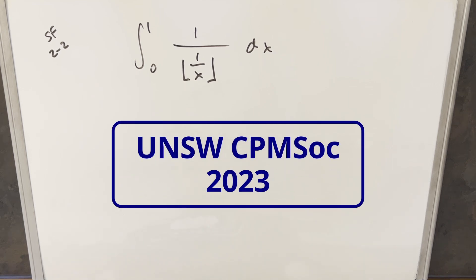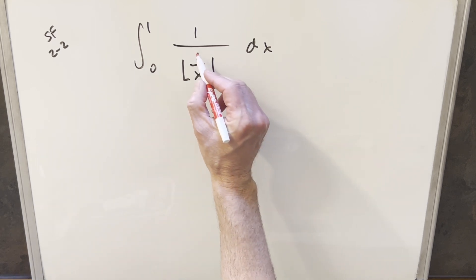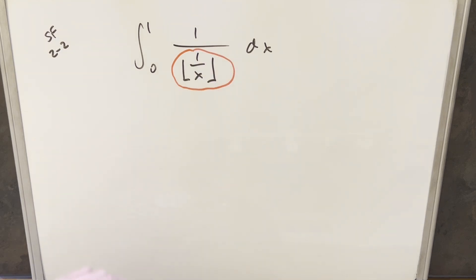Okay, we have here today another interesting integral from the UNSW-CPMS integration B from 2023. We have the integral from 0 to 1 of 1 over the floor of 1 over x dx. I thought this was a really interesting example because we have the floor in the problem. We've done quite a few problems with the floor, but I do think this is different than some of the other examples we've seen.